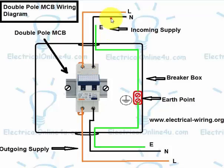In the diagram, I show the neutral wire is a black color, line wire is a red color, and earth wire is a green color.